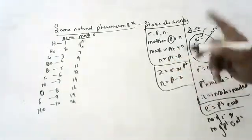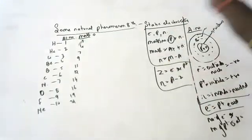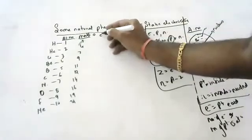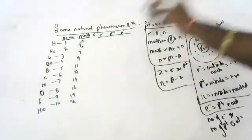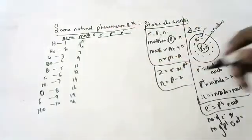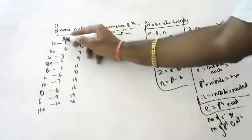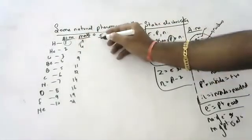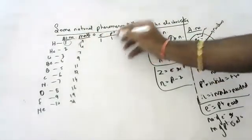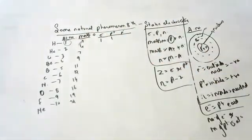Atomic number means the number of electrons or protons. The neutron number means mass number minus atomic number. For example, hydrogen's atomic number is 1 — it has 1 electron and 1 proton.